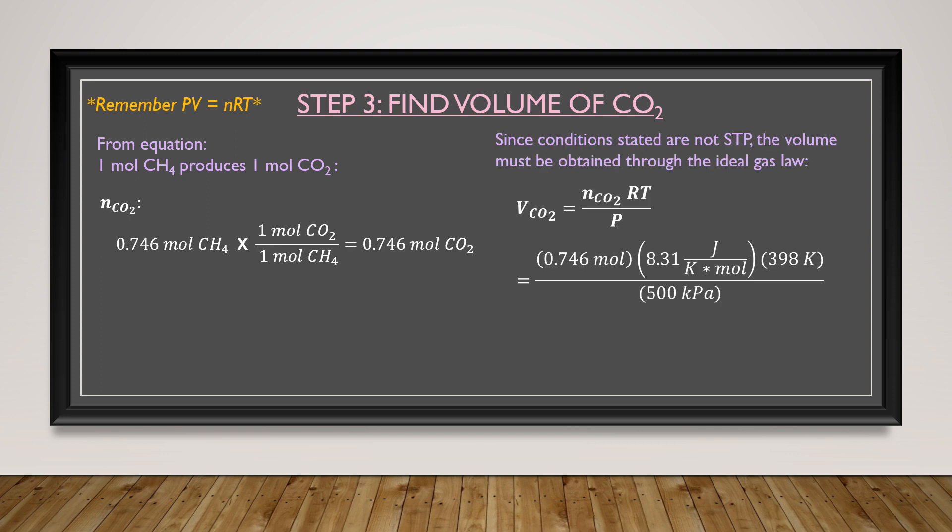Now, to obtain the volume of CO2, we need to use the ideal gas law formula. Since conditions stated are not STP, we have to go through this process. With the moles of CO2, our constant, and the pressure and temperature conditions given for CO2, we obtain a final volume of 4.93 decimeter cubed.